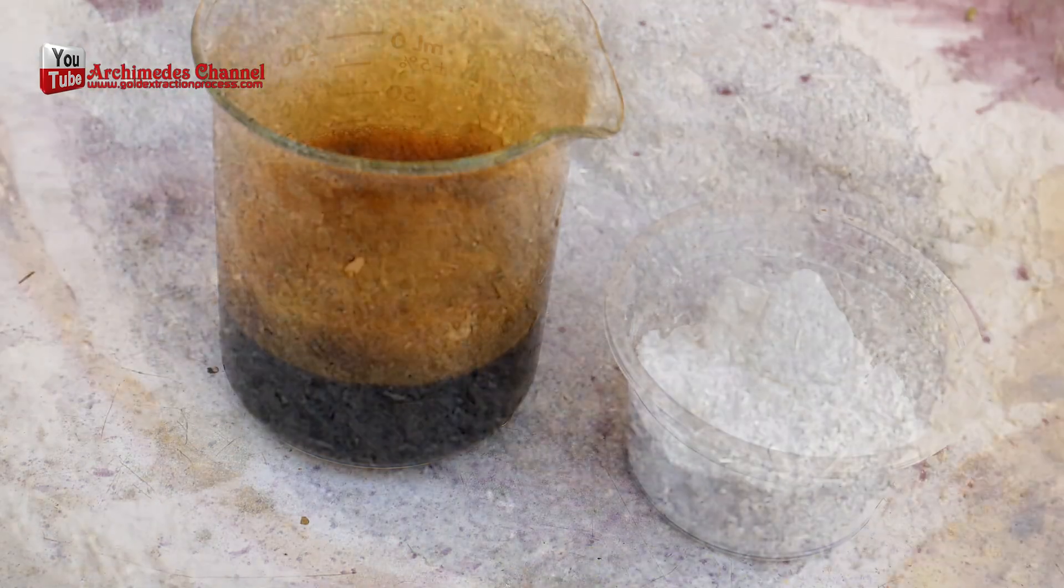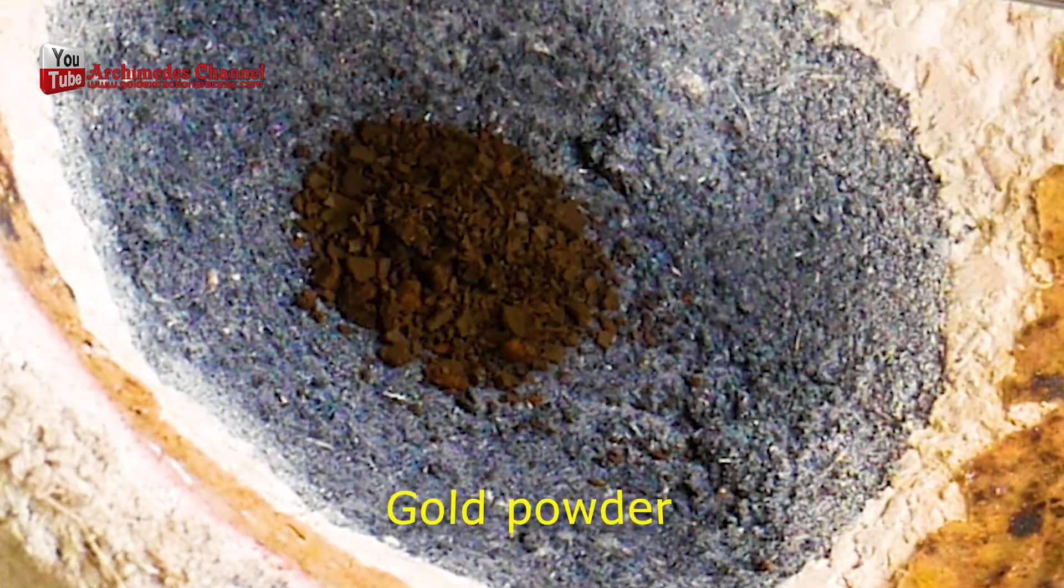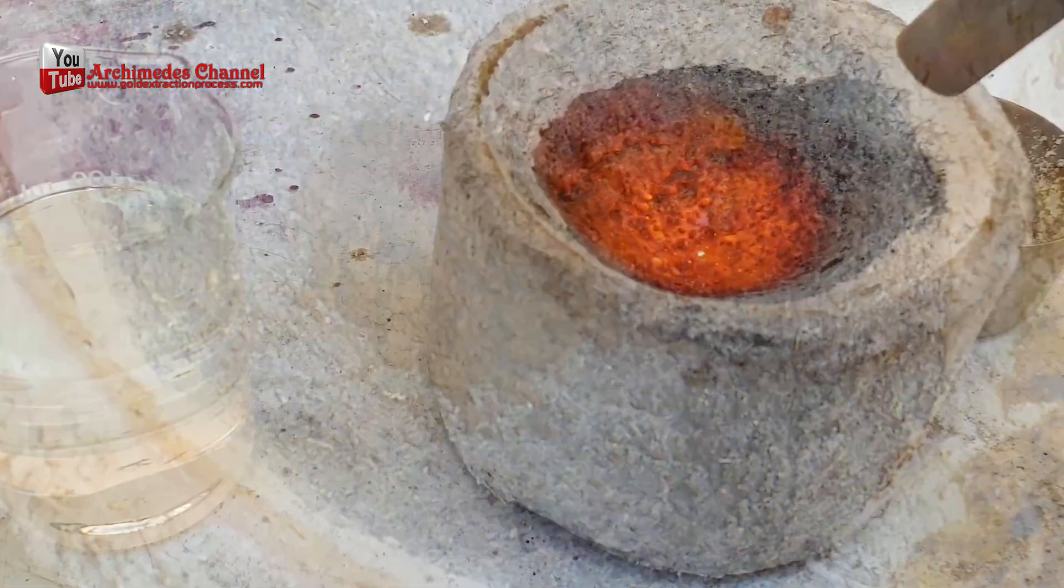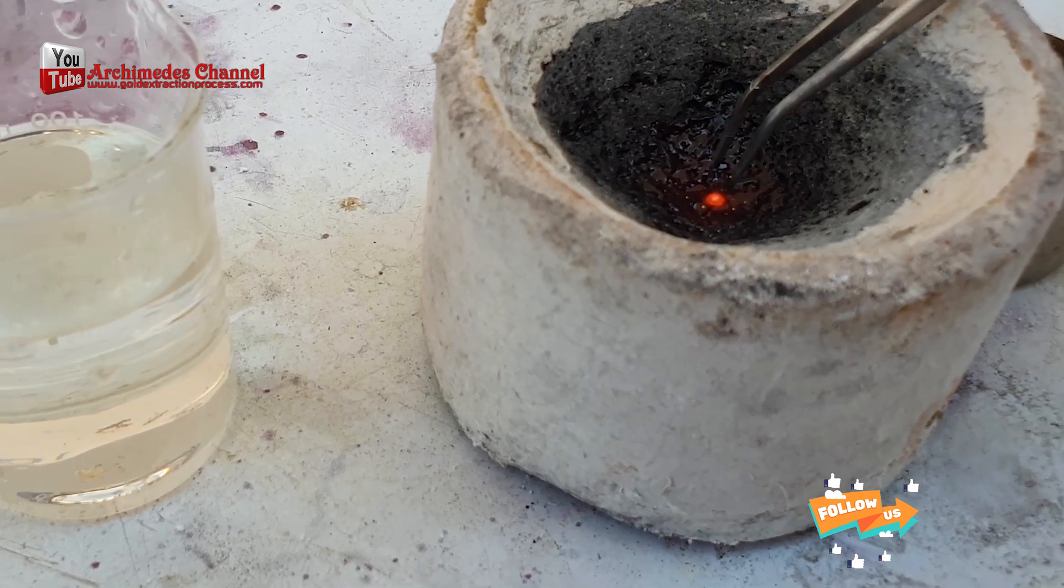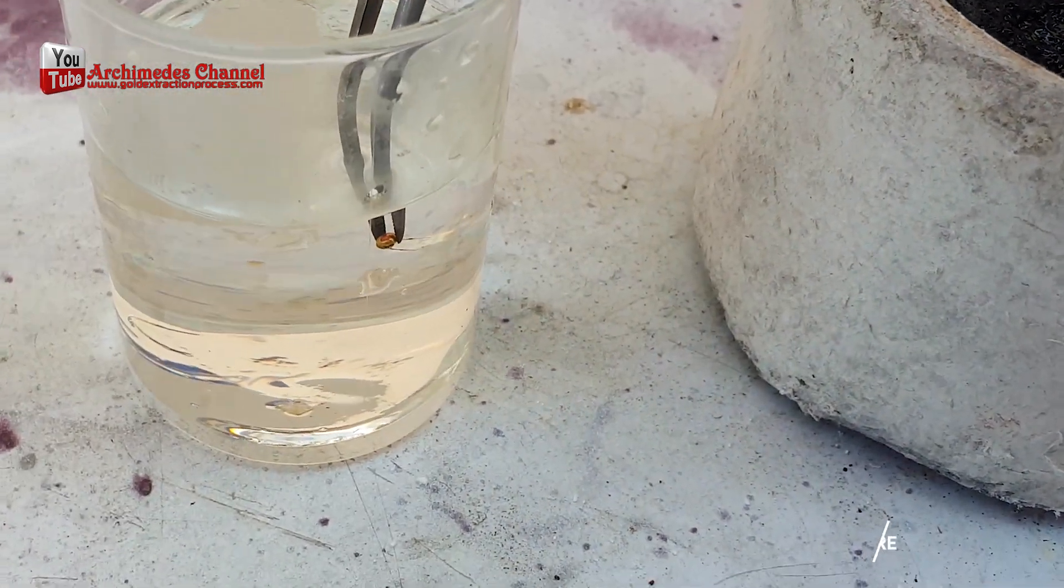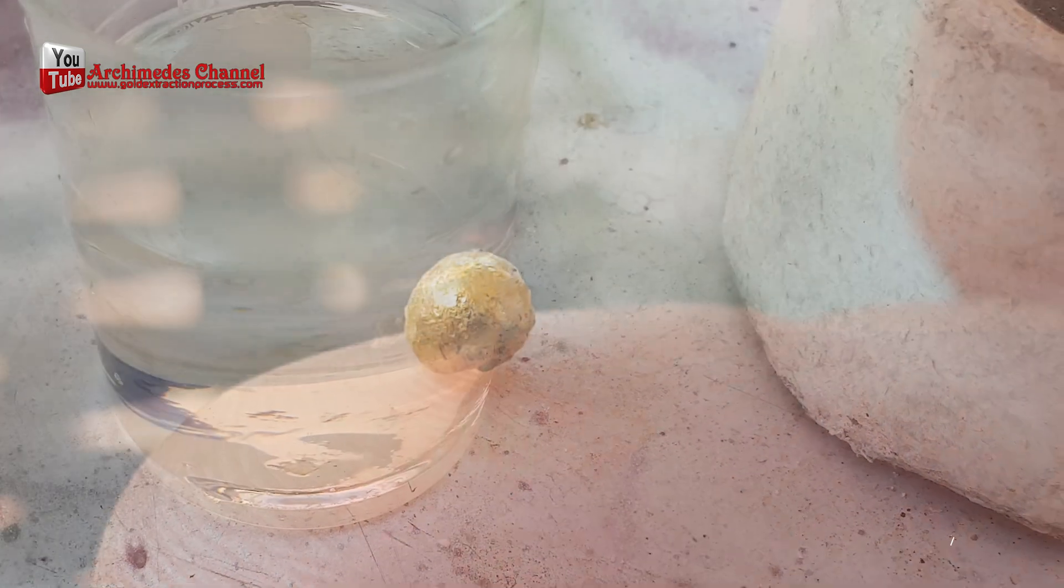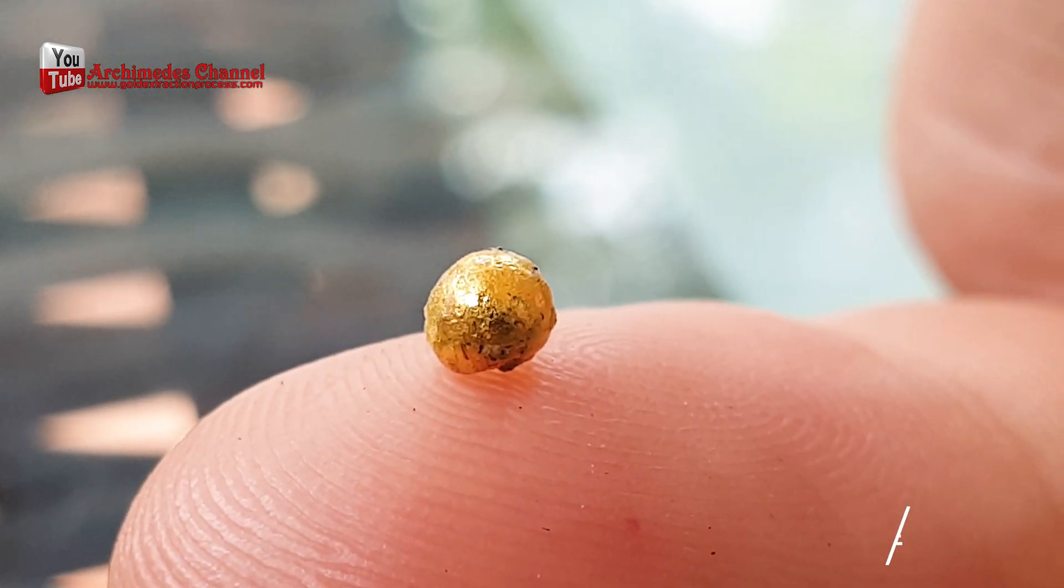Then clean the obtained gold sediment mud, dry the gold sediment mud, and melt it. You will receive a small piece of gold. You are very rich now. Thank you very much for taking the time to watch this video clip. Enjoy.